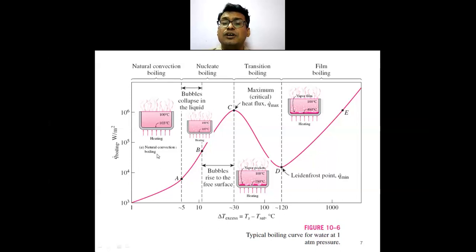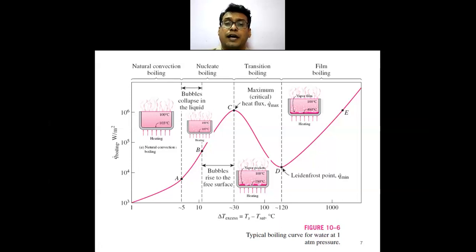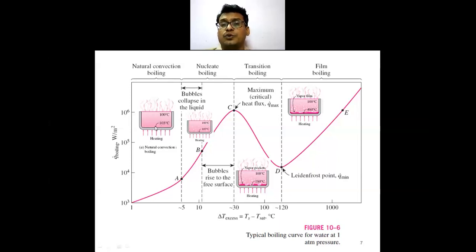In natural convection boiling, circulation currents develop naturally. The fluid near the solid wall surface gets heated and those fluid particles move upward due to lower density, while the upper fluid with lower temperature and higher density moves downward. This cycle continues and convective currents develop inside the vessel, driving natural circulation in pool boiling.